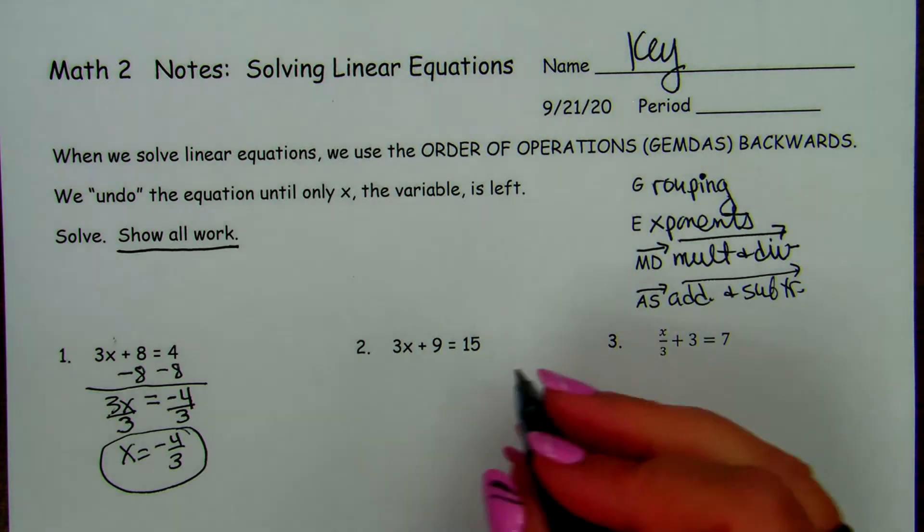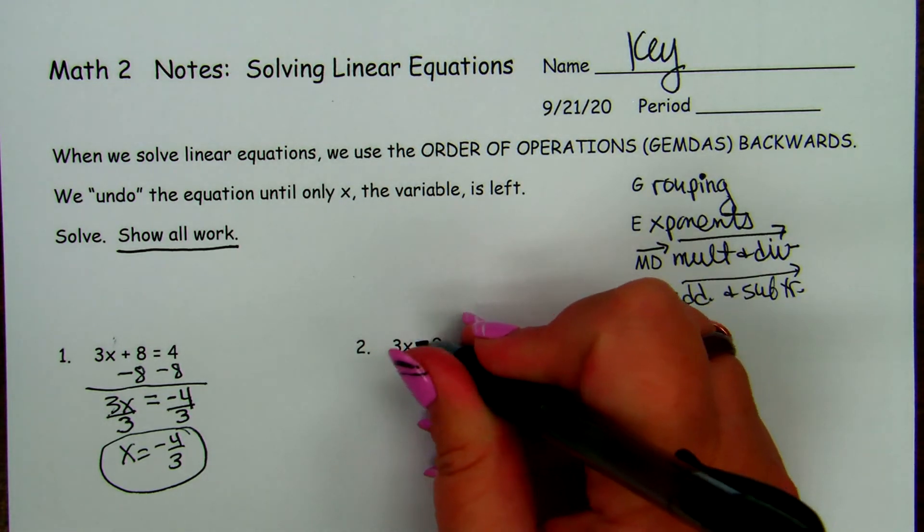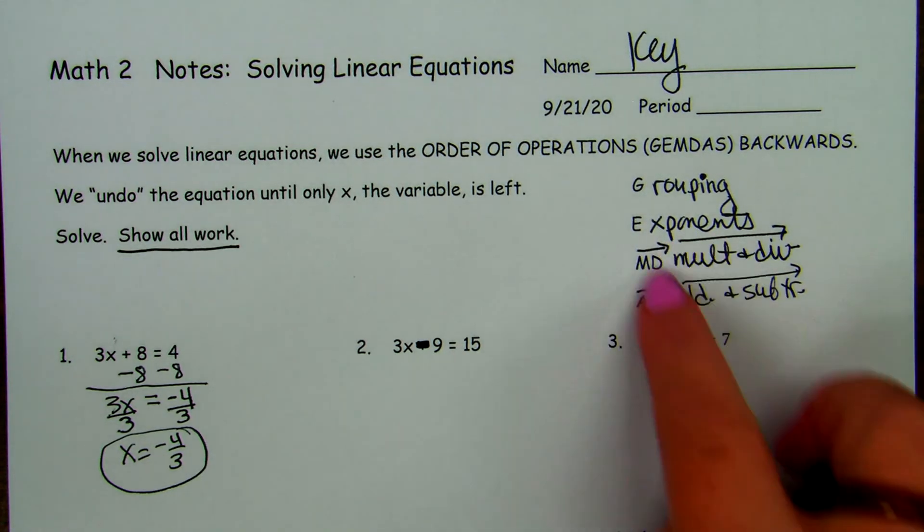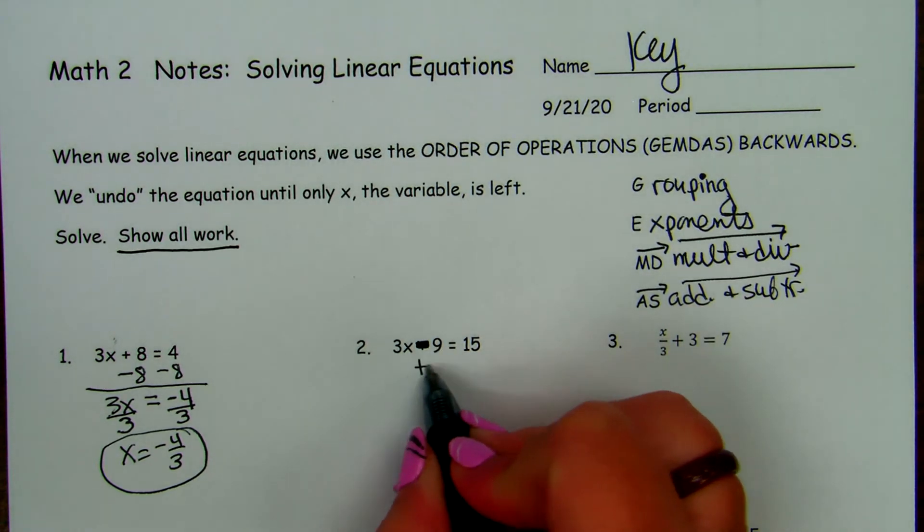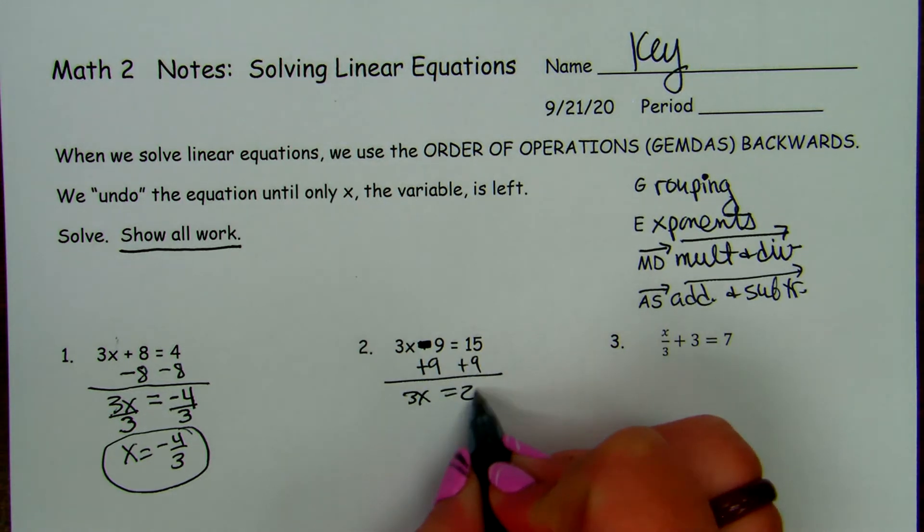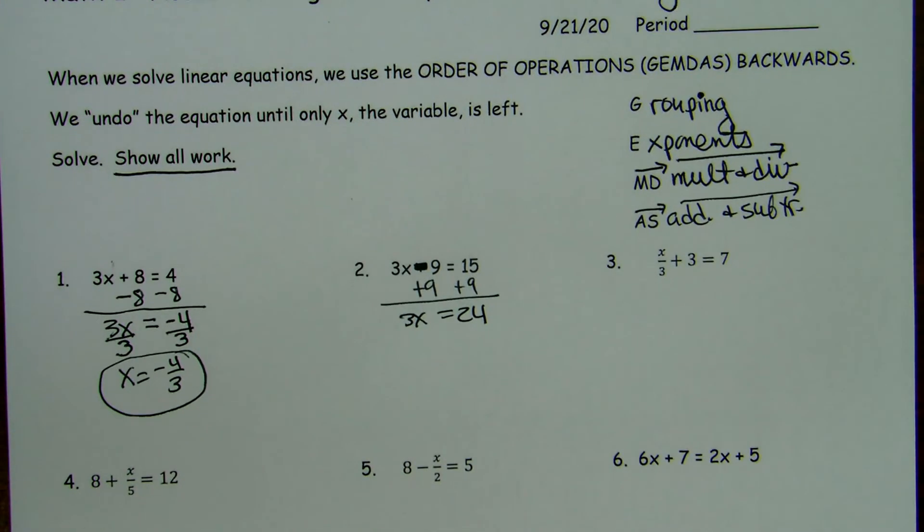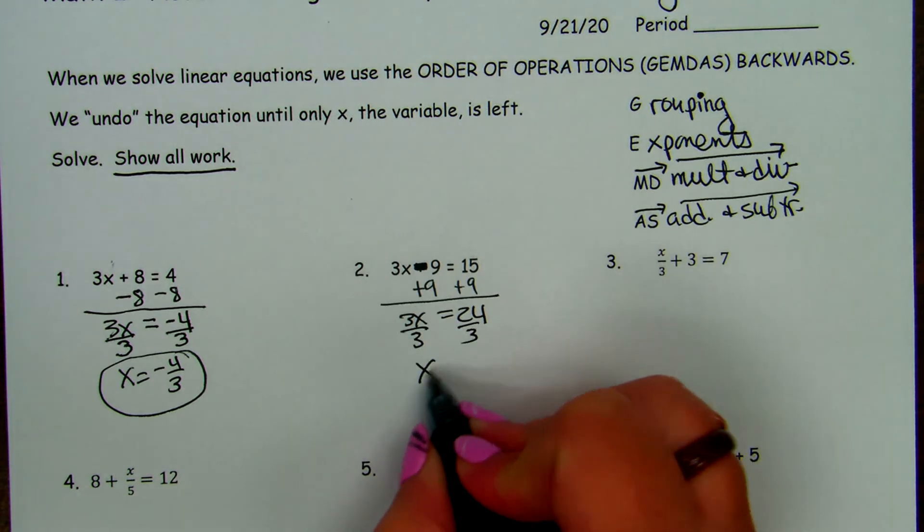On this one, we're going to change it to a negative 9, so you'll see another type of problem. Everybody change their 3x to a negative 9. 3x minus 9. Now we're not going to divide first because that's up here. We want to start at the bottom. We're going to do the opposite of minus 9, which is plus 9. And we get 3x equals 24. And now we do the division, which is the opposite of the multiplication right here. So we divide by 3, and we get x equals 28.